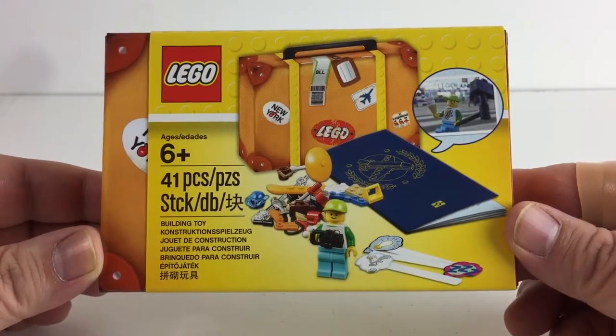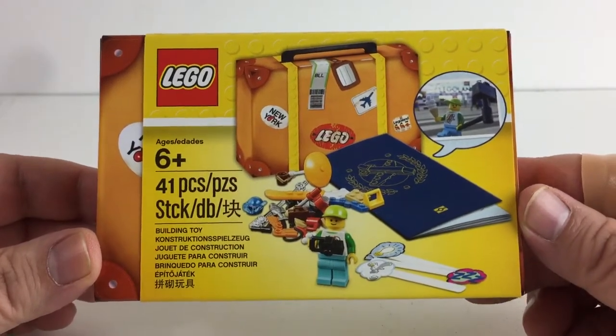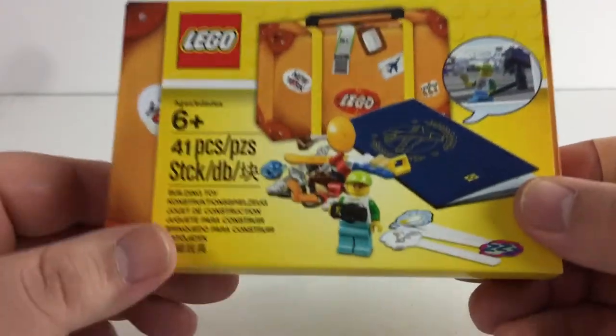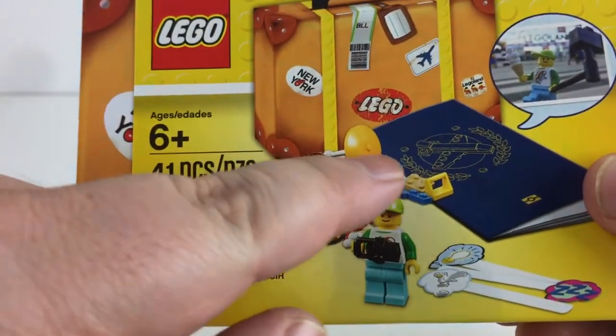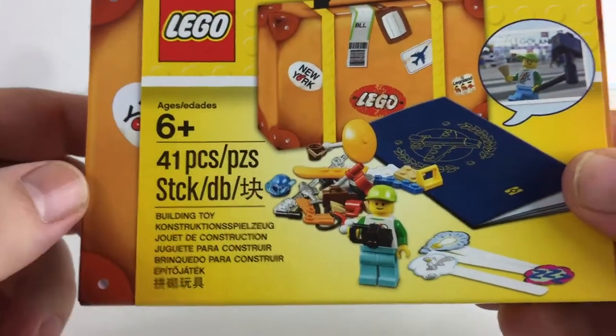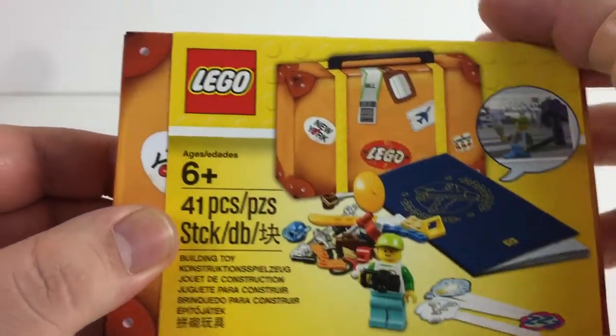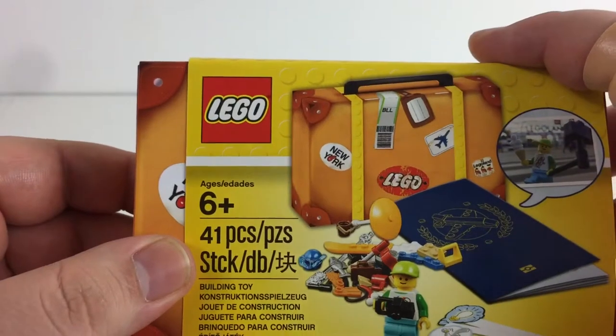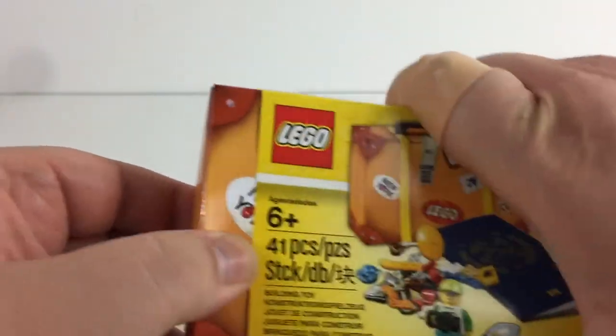He's sort of a world traveler. I can't remember the exact name of the little set, but he is the coolest little guy and he comes with tons of accessories that he needs for traveling all around the world and his little passport. And then the case is this suitcase.